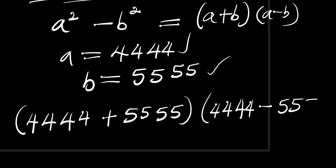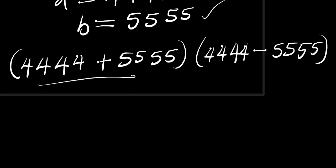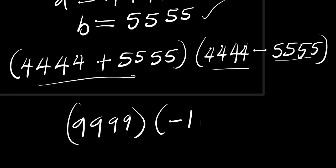So what we are going to do is to add up this. We are going to have 9999 times, if you subtract 5555 from this, we are going to have -1111.